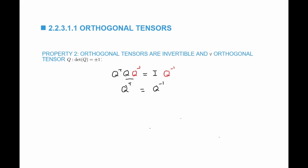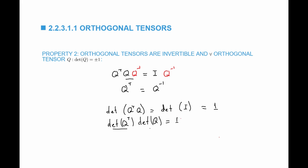For every orthogonal tensor, the determinant of Q equals positive or negative 1. This is because the determinant of Q transpose Q equals the determinant of I, which is 1. Since the determinant of Q transpose equals the determinant of Q, we get the determinant of Q squared equals 1, which means the determinant of Q equals plus or minus 1.